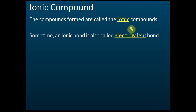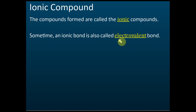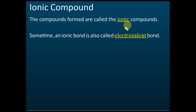The ionic bond is also called the electrovalent bond. Sometimes exam questions don't say ionic compound but use the word electrovalent — so you need to know that ionic bond, electrovalent bond, ionic compound, and electrovalent compound are all the same thing. The positive element is a metal.